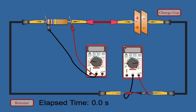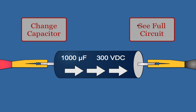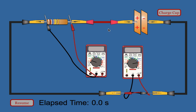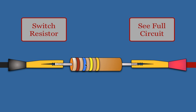If you'd like to change the value of the capacitance, just click on the capacitor, hit 'change capacitor,' and you'll get either a larger or a smaller capacitor. Make sure when you record your capacitor value, you put it in farads. And make sure when you write down the resistance of your resistor, you put that in ohms.